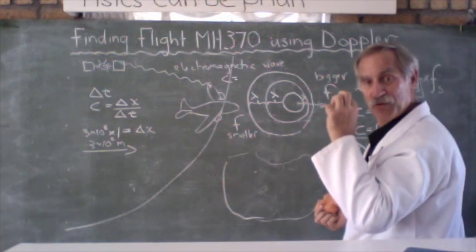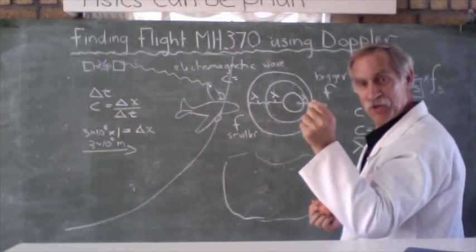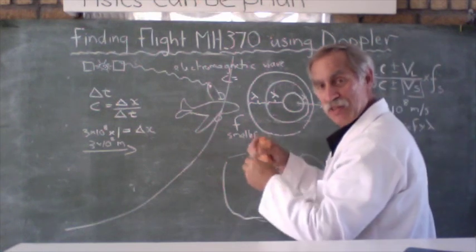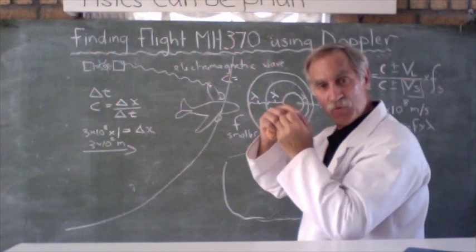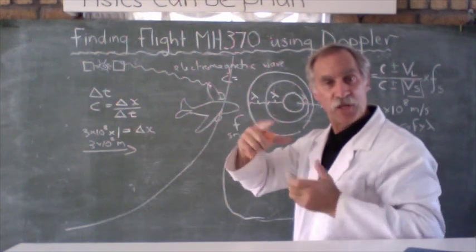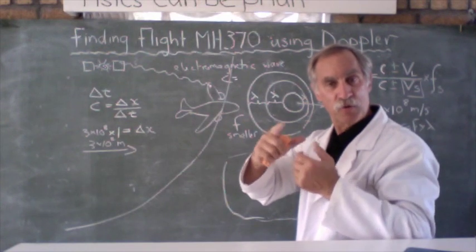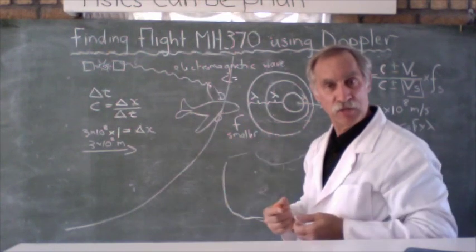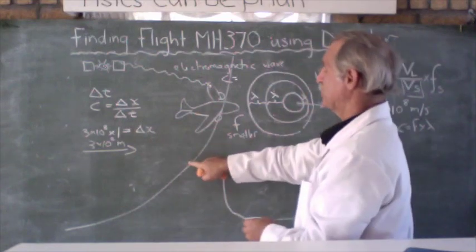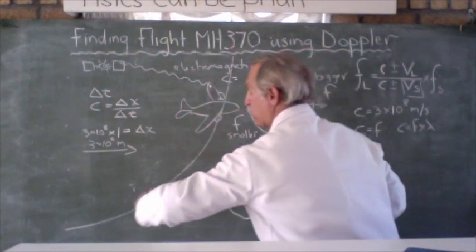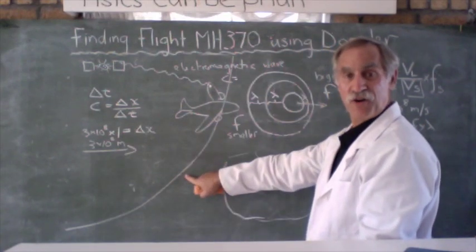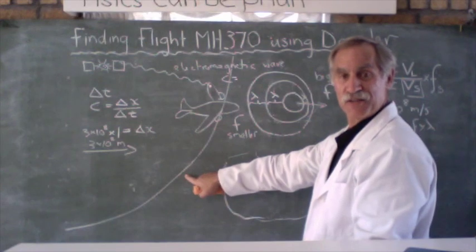So this is what they did. They listened to the pings, the actual frequency of the ping which they knew. And they could see that the ping's frequency was lower and the wavelength was longer. The frequency was lower. There were less pings per second. So therefore, they could conclude from this that the plane was flying in the southern part of this arc, past the west coast of Australia.